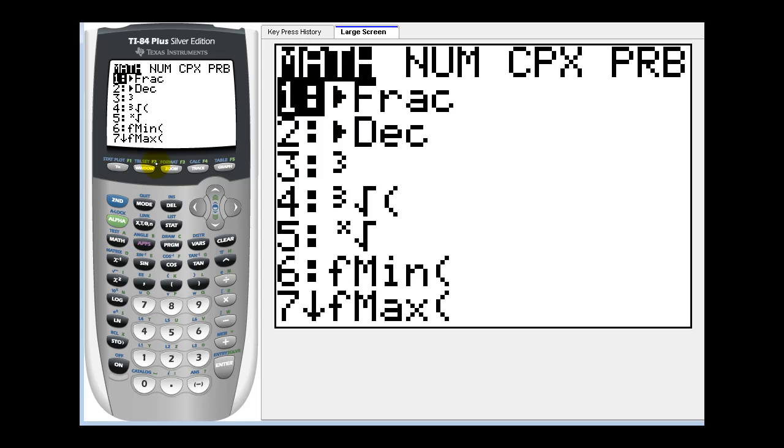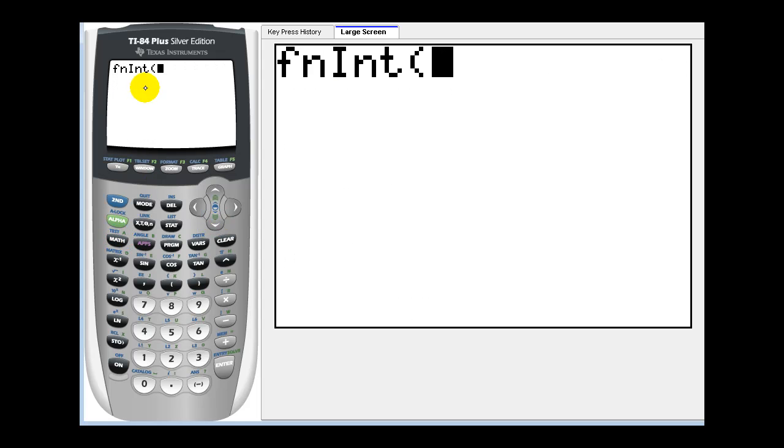One way is to press math and then option nine, which brings up function integration. Next we type in the function, which is 4x minus x squared, comma the variable of integration which was x, comma the lower limit of integration which was zero, comma the upper limit of integration which was four.